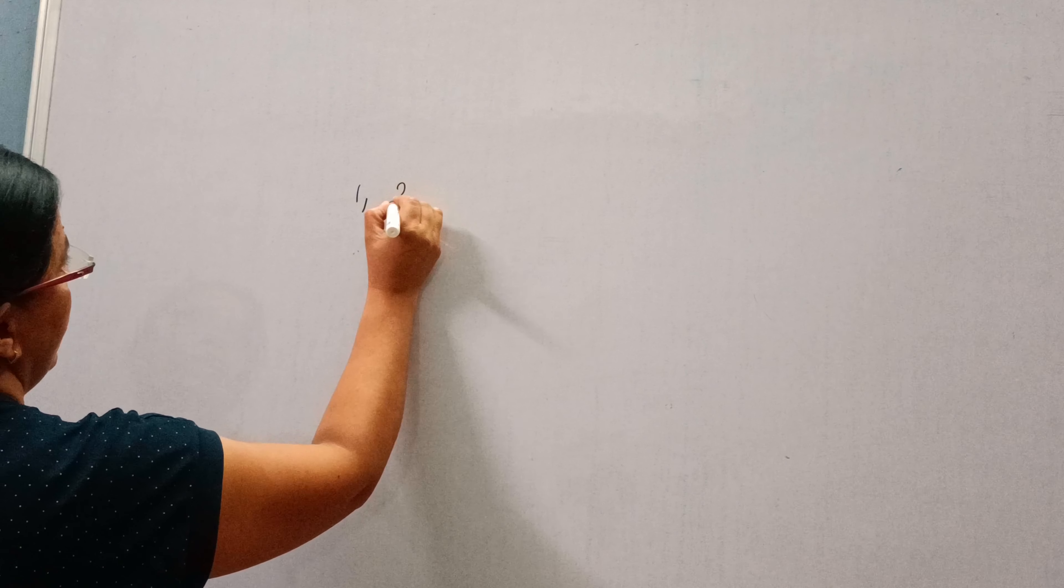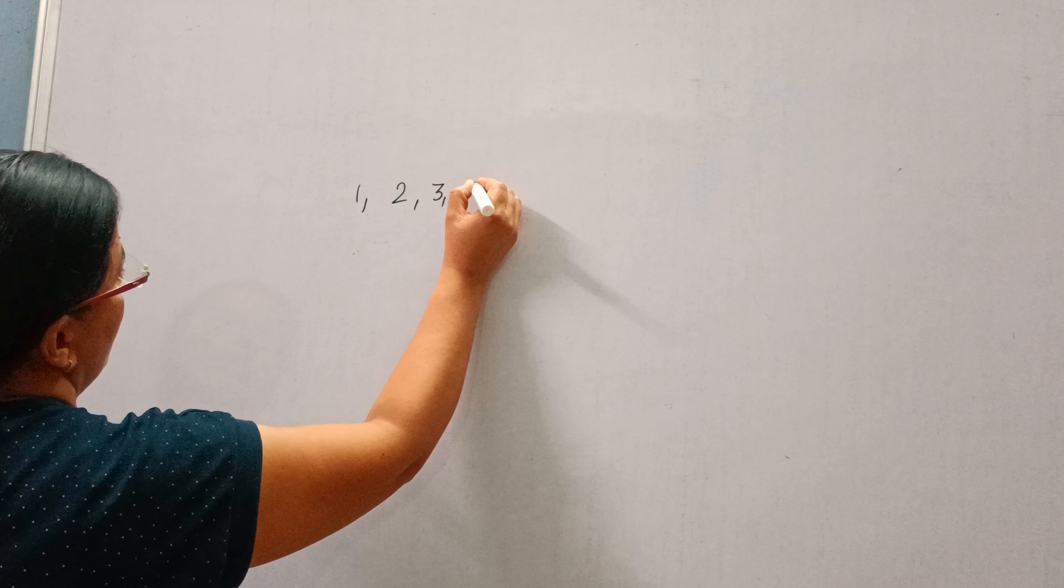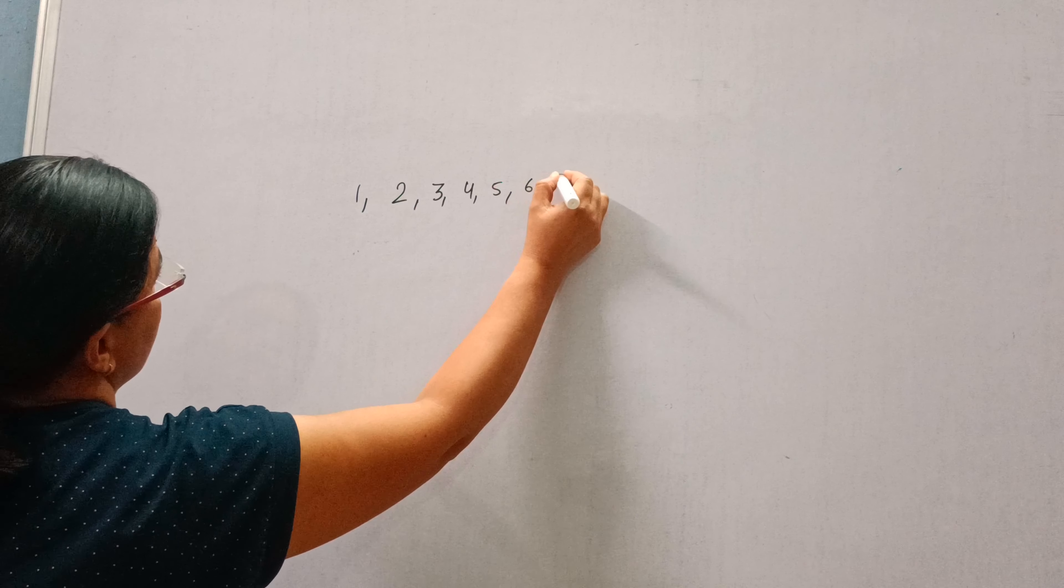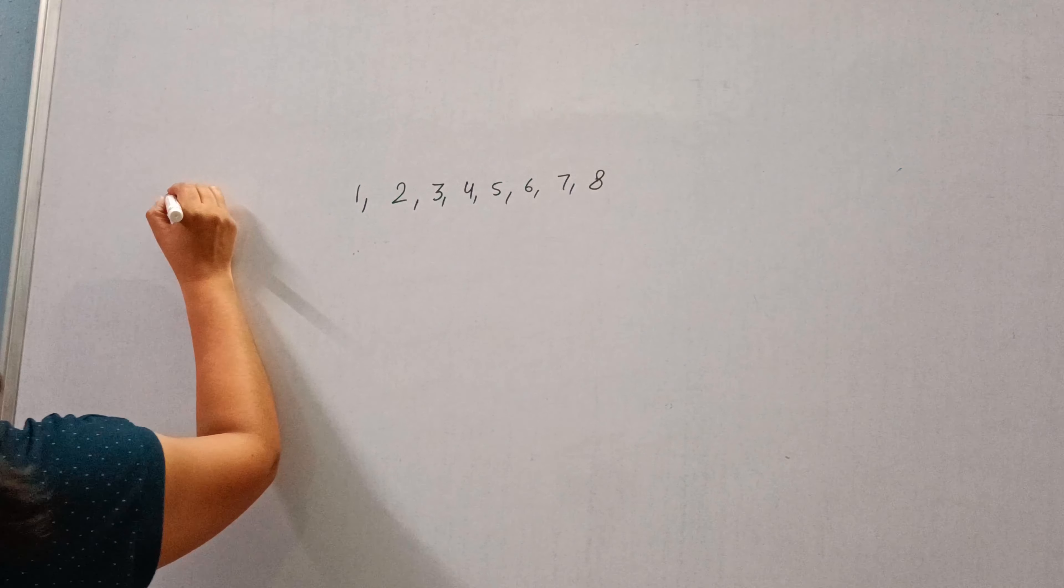Greetings everyone. Today we will do question number 12 of exercise 15.1. Question number 12: a game of chance consists of spinning an arrow which comes to rest pointing at any of the numbers 1, 2, 3, 4, 5, 6, 7, 8. So total numbers are 8.